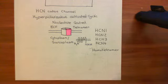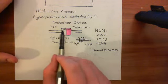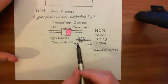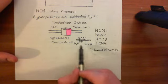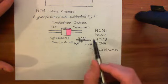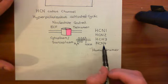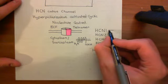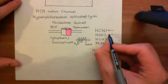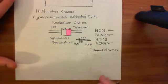The sinoatrial node has a special type of cation channel within it, which is this HCN cation channel. These channels are tetramers made up of four separate subunits, and each of the subunits has a membrane-spanning topology. There are four different types of HCN subunits. The main ones actually present in the heart are HCN1, HCN2, and HCN4, so HCN3 isn't really present within the heart.